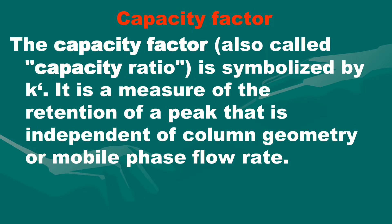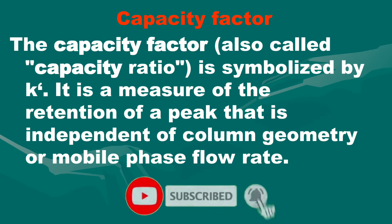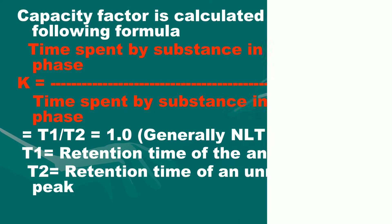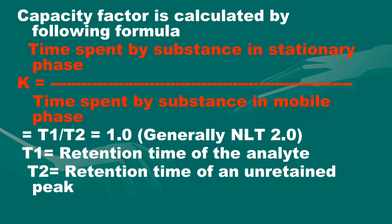Next is capacity factor, also called capacity ratio, symbolized by K. It is a measure of the retention of a peak that is independent of column geometry or mobile phase flow rate. Capacity factor is calculated by the following formula: K = (time spent by substance in stationary phase) / (time spent by substance in mobile phase) = (tR - t0) / t0, where tR is retention time of the analyte and t0 is retention time of the unretained peak. The capacity factor is generally not less than 2.